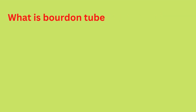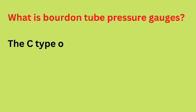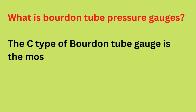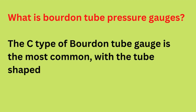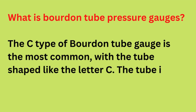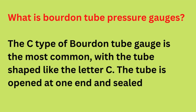What is a Bourdon tube pressure gauge? The C-type Bourdon tube gauge is the most common, with the tube shaped like the letter C. The tube is opened at one end and sealed at the other.